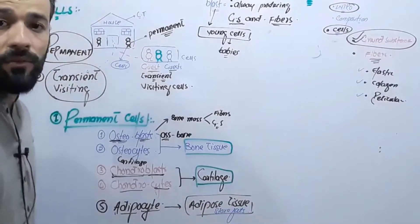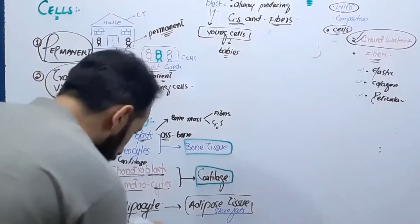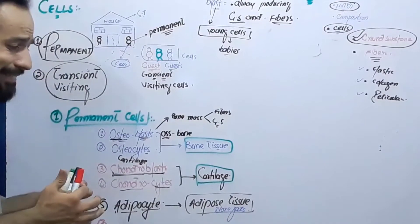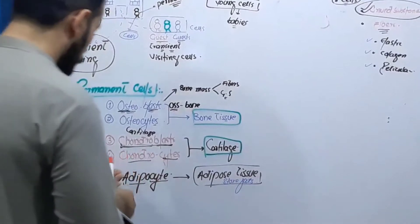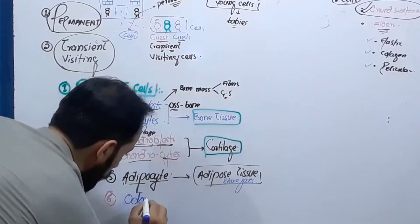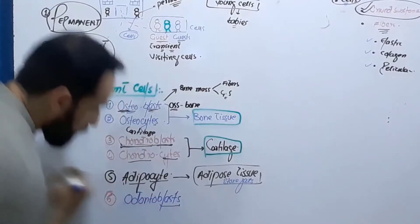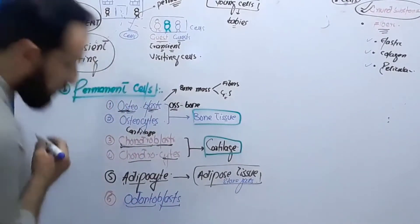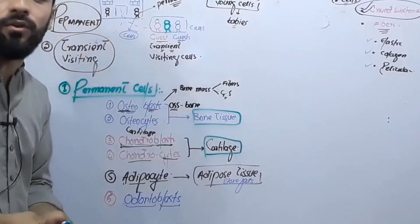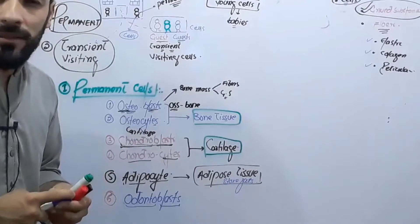Adipose tissue is a type of connective tissue in our body. The next type of cell which is permanently present in the connective tissue is the odontoblast — we have discussed chondroblasts already. Odontoblasts are blast cells present in the teeth, and they are responsible for making the enamel of the teeth.